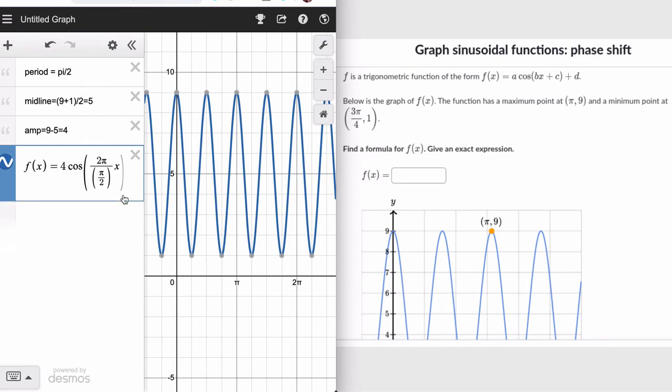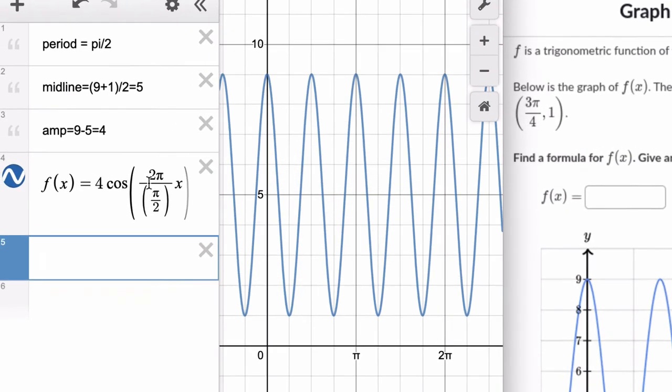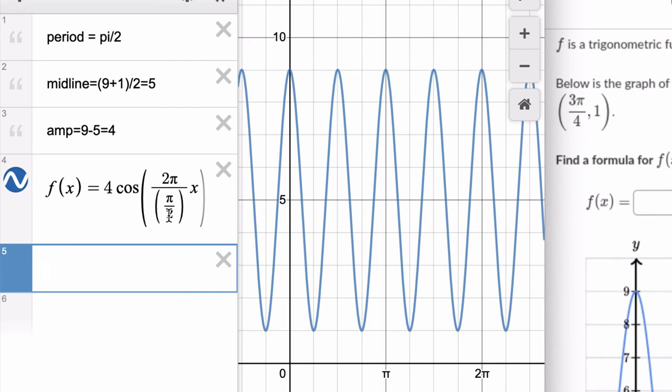So we can simplify this: 2pi over pi/2. We just multiply 2pi by 2 over pi, right? You divide by a fraction, you keep the numerator and multiply it by the reciprocal of your denominator. And that's going to mean you multiply 2 by 2, which is 4. So you have 4pi and then over pi, which is just 4pi over pi is 4.